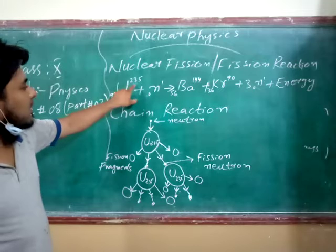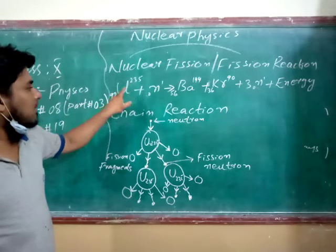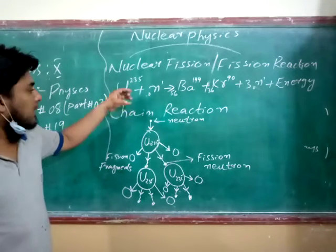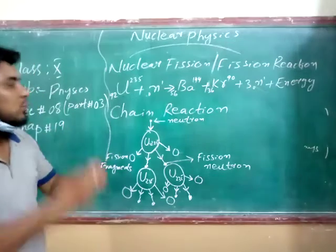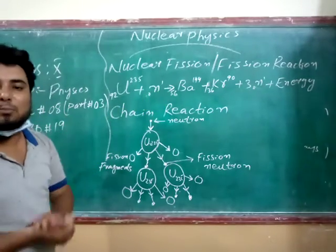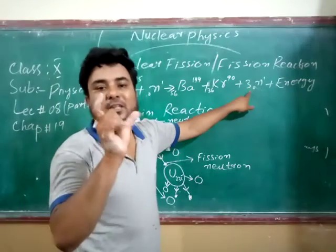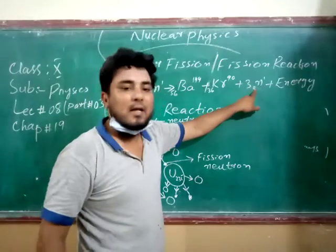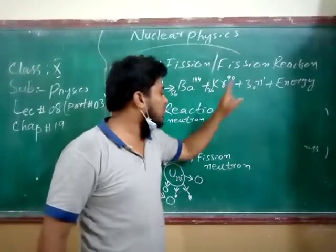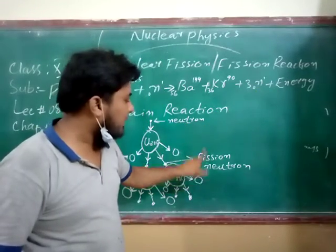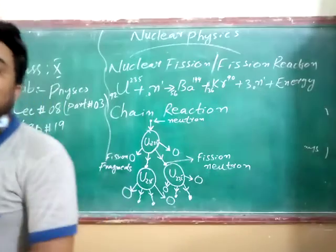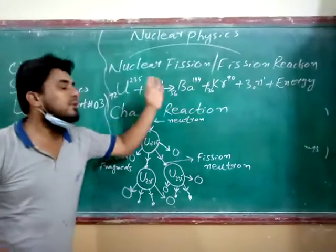When uranium-235 is bombarded with neutron, it breaks down into two smallest nucleus: one is barium, another is krypton, and with three fission neutron. This fission neutron is produced because of the fission reaction.